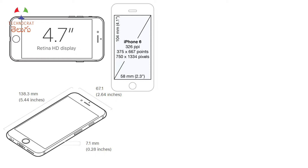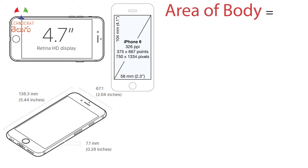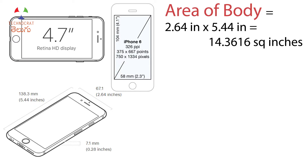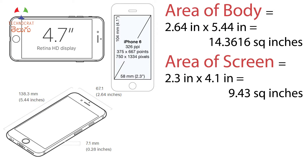Looking at the vertical and horizontal dimensions: the screen is 4.1 inches tall and 2.3 inches wide. The phone body is 5.44 inches tall and 2.64 inches wide. The body area is 2.64 × 5.44 = 14.3616 square inches. The screen area is 2.3 × 4.1 = 9.43 square inches.